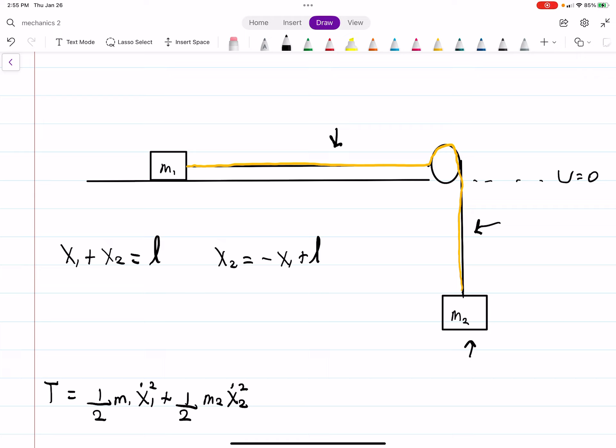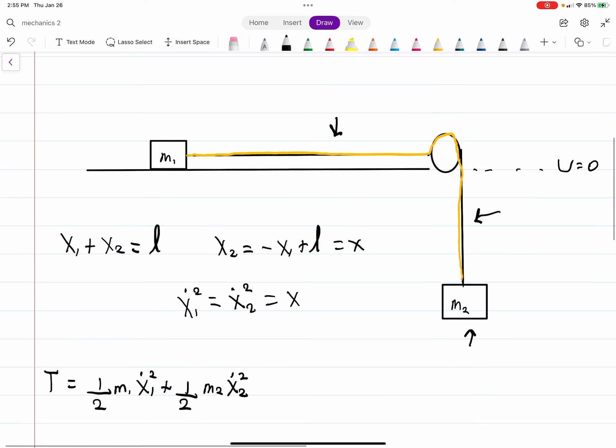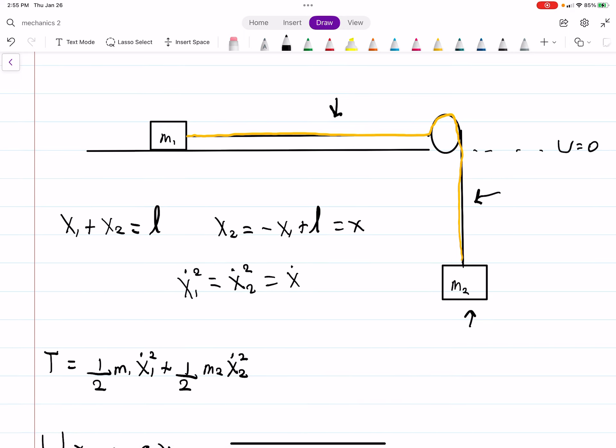And likewise, if you take derivatives, well, the derivative of a constant will just go to 0. So you end up getting, and then you square it. So we just call this X. X dot squared.